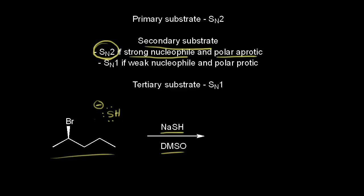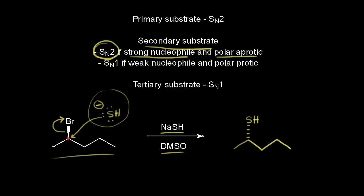Our nucleophile attacks at the same time that we get loss of our leaving group. The nucleophile attacks this carbon in red, and these electrons come off onto the bromine to form the bromide anion. For this reaction, we need to think about the stereochemistry of our SN2 reaction — our nucleophile has to attack from the opposite side of our leaving group, so we get inversion of configuration. The bromine was on a wedge, so in the final product the SH goes on a dash.